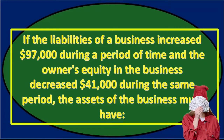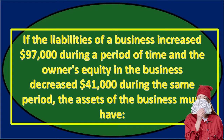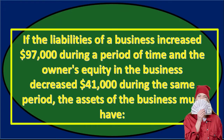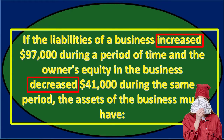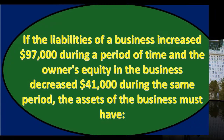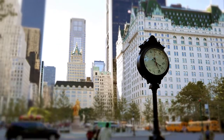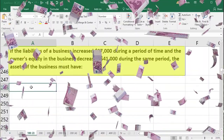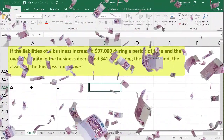Next problem: if the liabilities of a business increased $97,000 during a period of time and the owner's equity decreased $41,000 during the same period, the assets of the business must have changed by what amount? This is the same accounting equation with a twist — we're talking about activity: the increasing and decreasing over time rather than a point in time.